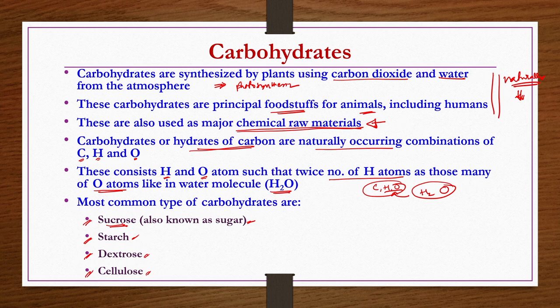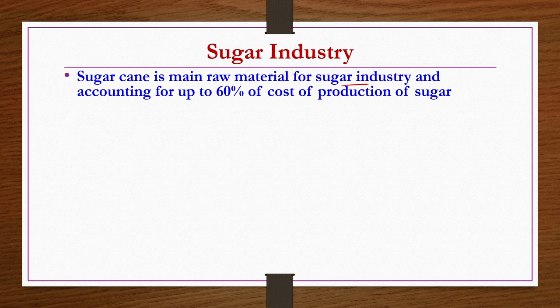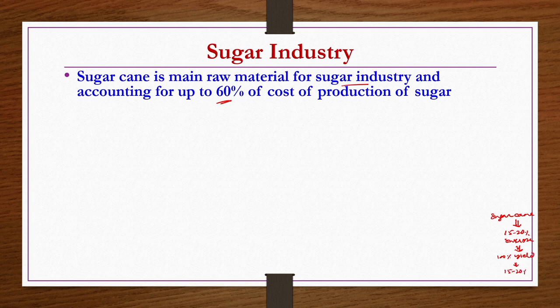Let us start with sucrose — the production of sugar at the industrial level. Sugarcane is the main raw material for the sugar industry, accounting for up to 60 percent of the cost of production. In general, sugarcane contains only 15 to 20 percent sucrose — the rest is moisture and other components. So even with 100 percent extraction yield, you can get only 15 to 20 percent sucrose from sugarcane.